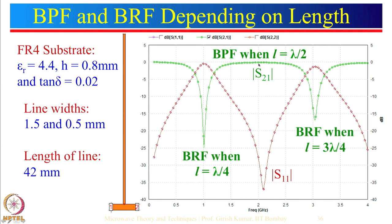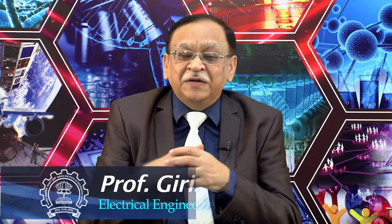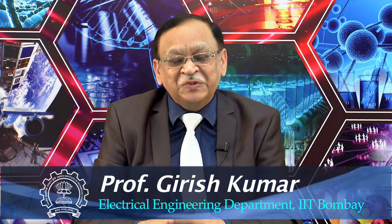When the band pass filter characteristic is satisfied, everything passes from input to output so nothing is reflected — S11 is very small. In the case of a band reject filter, nothing passes through, so almost everything is reflected back and S11 is very high at that frequency. We will continue from here in the next lecture with more examples of how to realize band pass filters and band reject filters. Thank you very much.